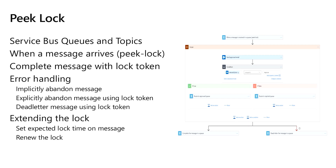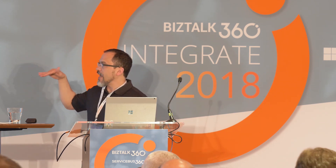When using queues, you want to do safe extraction of messages. You don't want to pull a message from the queue and delete it right away because if something downstream fails, that message is lost. You can implement the peek-lock pattern in Logic Apps — for example, with a service bus queue or topic, when a message arrives you apply a peek lock and handle the message.